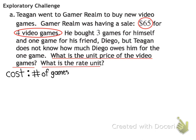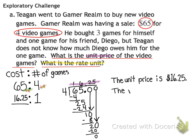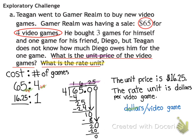We're comparing the cost to the number of games. We know it costs $65 for four games, and now I need to find the unit price — how much would it cost for one game? I'm going to divide four by four because that gives me one, and four is my constant number. So if I divide four by four, I need to divide 65 by four, and after dividing I get $16.25. So it costs $16.25 for one game. The rate is $16.25 to one, the unit price is $16.25, and the rate unit is dollars per video game.